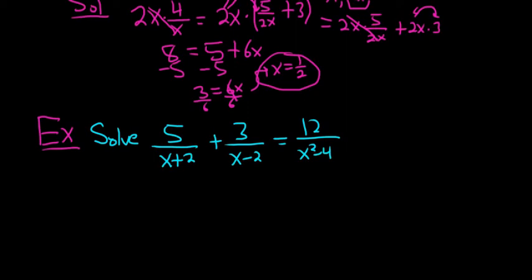So the first thing to notice in this problem is that if you got -2 as an answer, it wouldn't work because you would get 5/(-2+2), and that's 5/0, so it's undefined. You can never have 0 on the bottom.